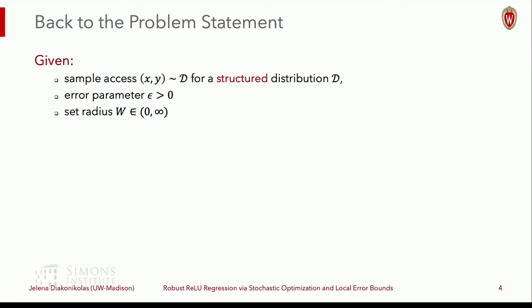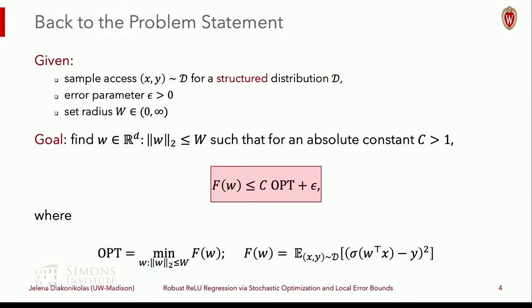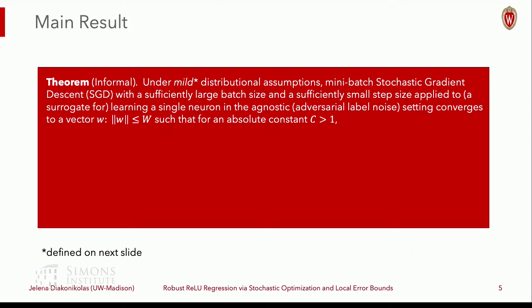So now if we go back to the problem statement, we assume we have sample access to some unknown, but structured distribution. We have some error parameter epsilon. And I'll just confine my weight vectors to some bounded set. Let's say it's an L2 ball of radius W. It doesn't really matter that much. But the goal is to find a parameter vector of norm at most W such that for an absolute constant, we want an absolute constant here. We do not want something that scales with dimension because otherwise it quickly becomes uninformative. We get error C times OPT plus epsilon, where OPT is the minimum possible mean square loss.